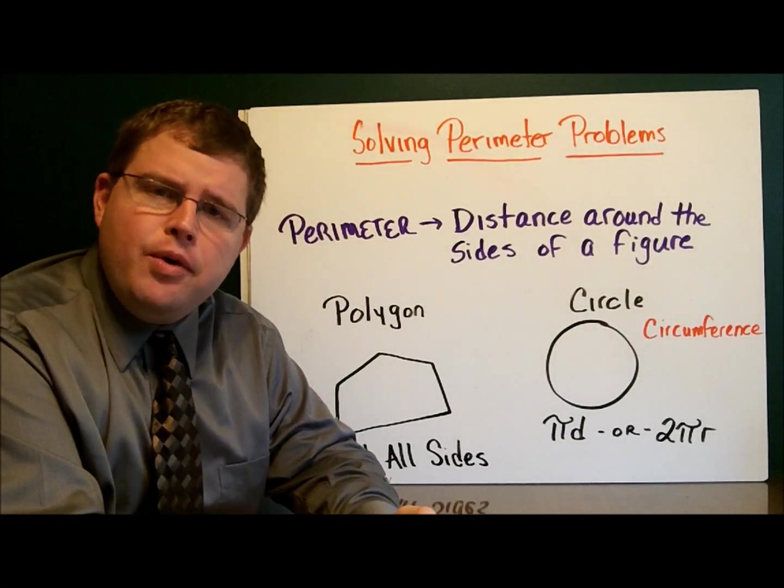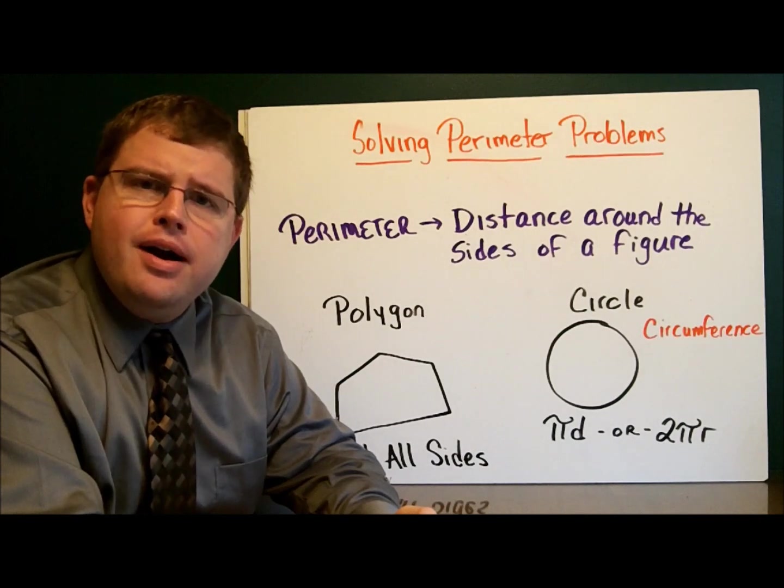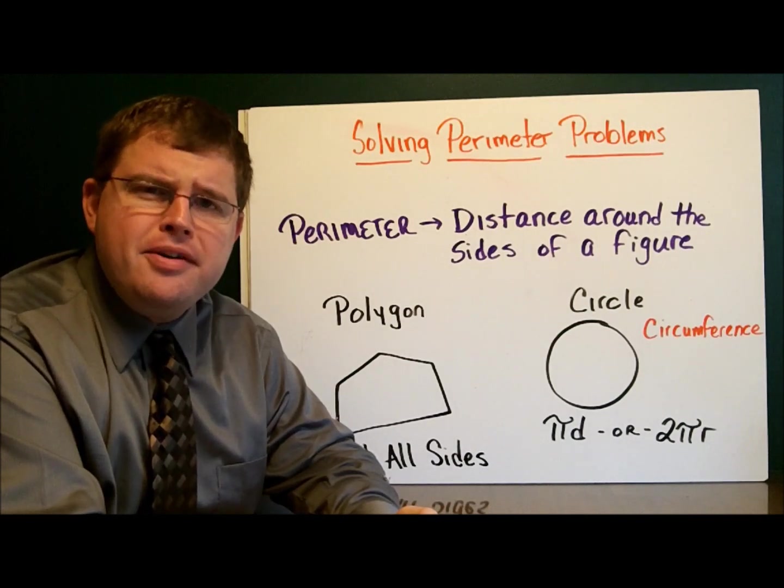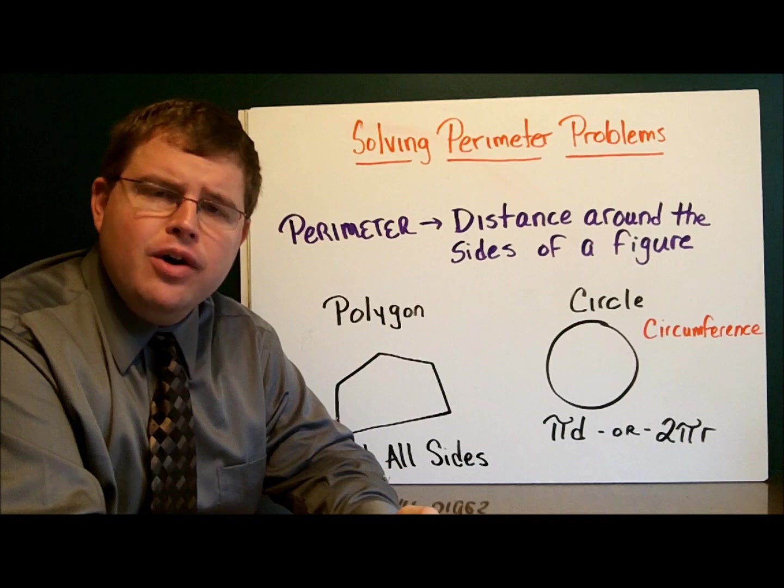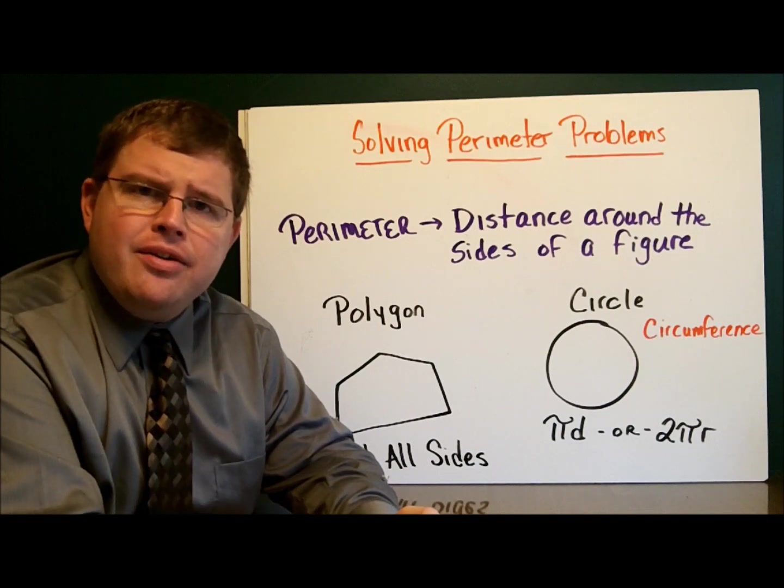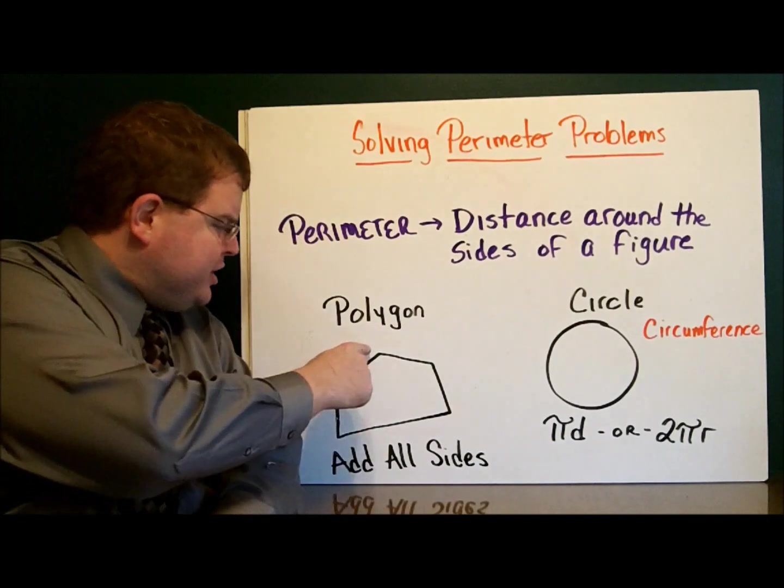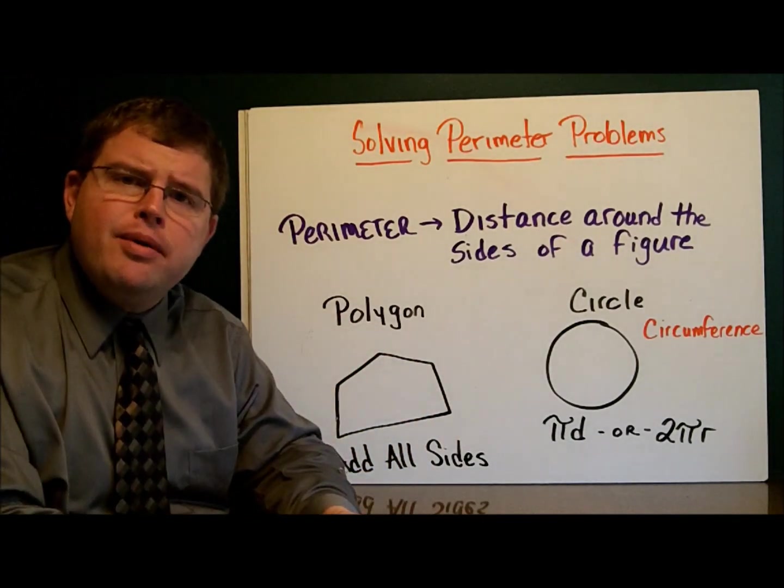Today we're going to take a look at some word problems that involve the perimeter of figures. Remember, the perimeter is found by measuring the lengths of all the sides and adding them together. In this pentagon, we measure all five sides and add them up. That's the perimeter.